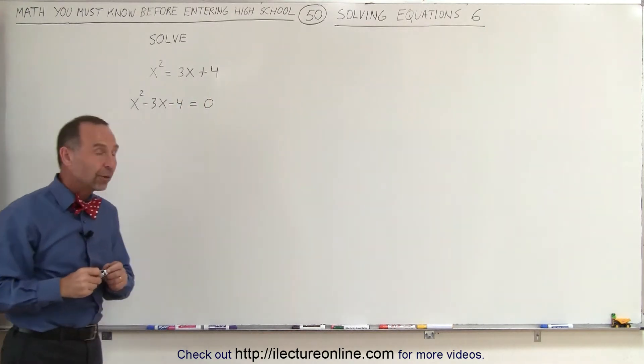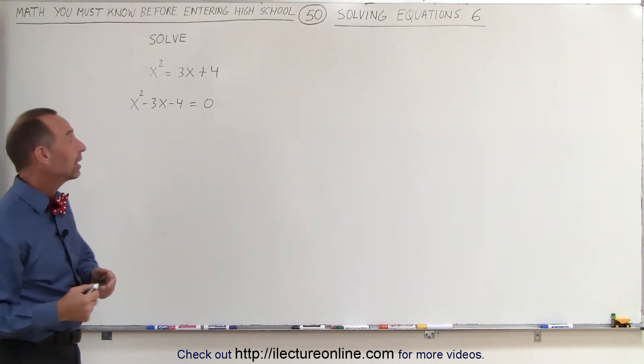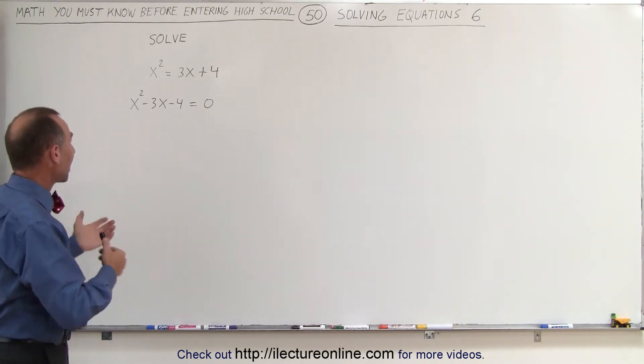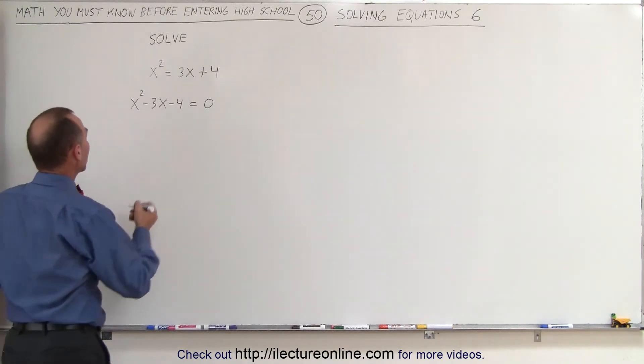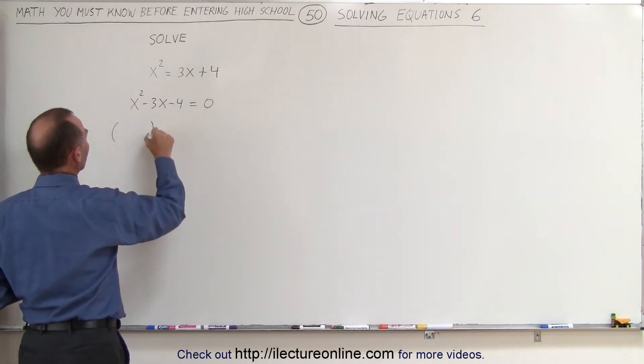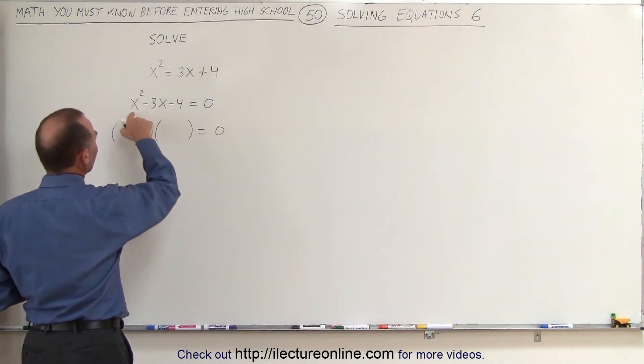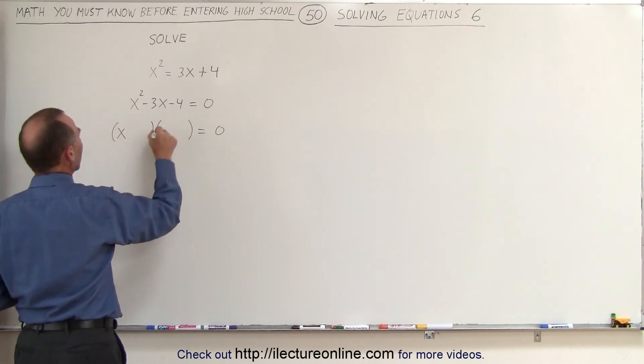Now, this looks like something we may be able to factor. Let's give it a try. It shouldn't take us too long to figure out if it's factorable or not. So if it is, it would be written as the product of two binomials. That would then be equal to zero. And since we have an x-squared here, that means we need an x and an x.